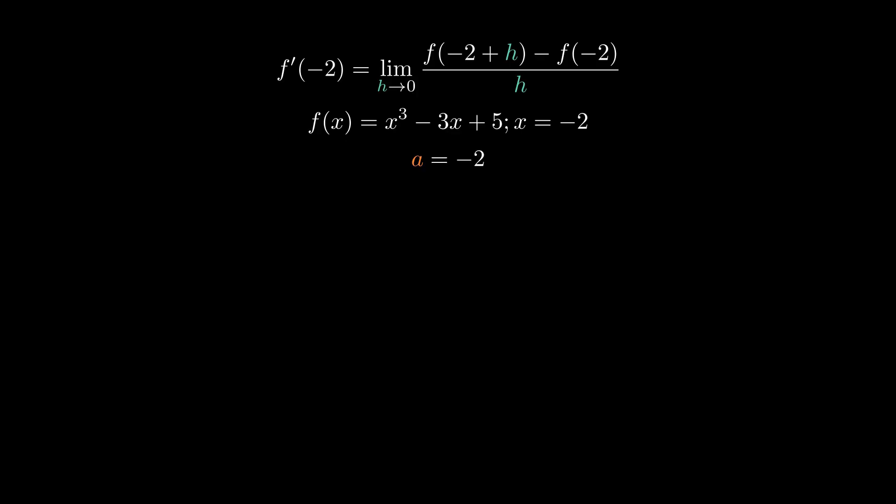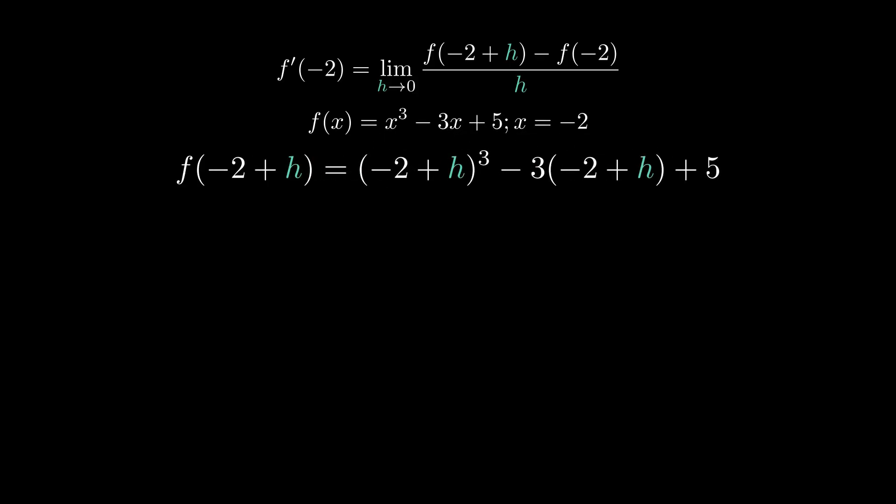As you may know from a previous video, this limit definition is a handful to evaluate. So typically the approach we take is to break it up into manageable chunks to tackle it. The first thing we're going to do is evaluate what f of negative 2 plus h is. When we do that, we're essentially going to plug in negative 2 plus h into x, and that'll give us negative 2 plus h cubed minus 3 times negative 2 plus h plus 5.